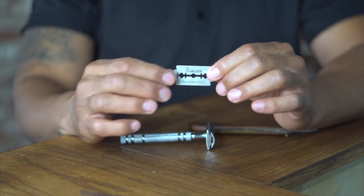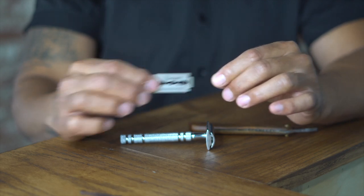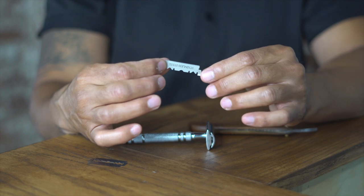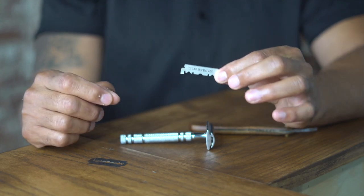You're going to use a full double-edged blade, and for the straight razor you're going to use a single-edged blade, meaning you're going to cut your full blade in half and you'll be able to load the straight razor.